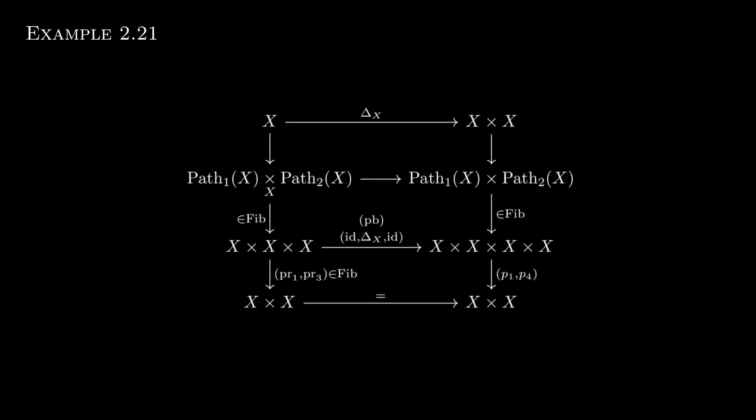So it turns out that path space objects are not very unique. Just consider the standard topological path space object, which is the mapping space out of the interval of length 1. We can construct a new path space object out of two copies of this and end up with the mapping space out of the interval of length 2 instead of 1.